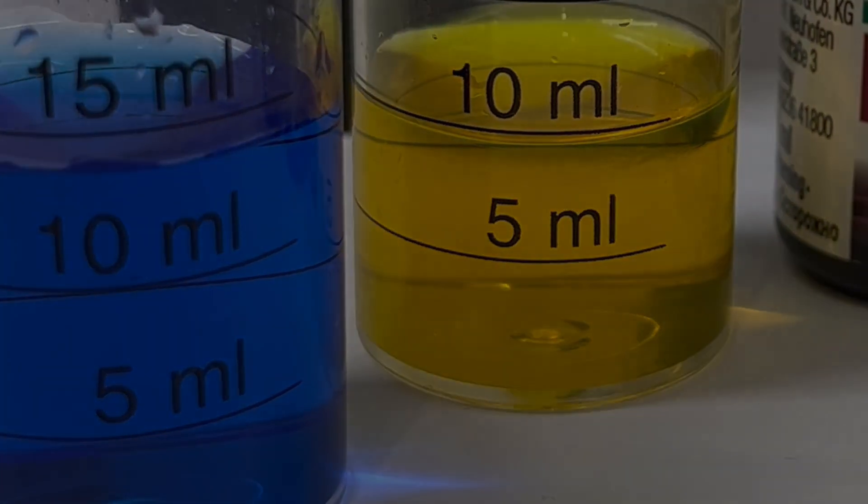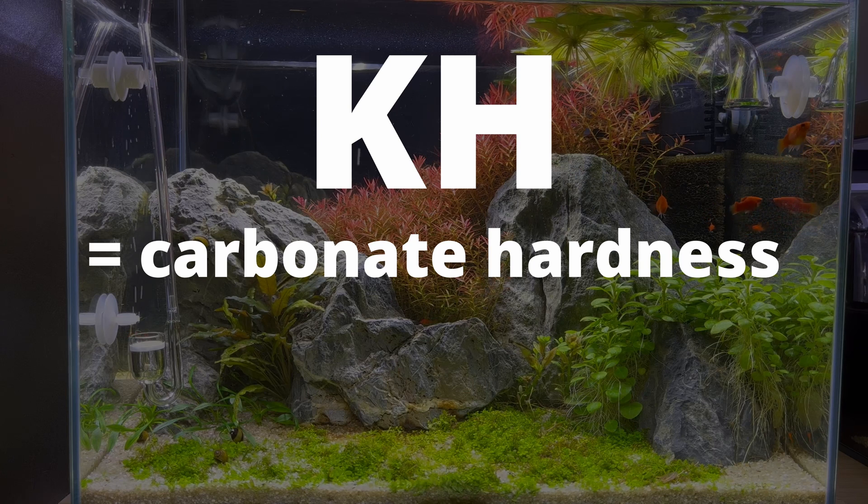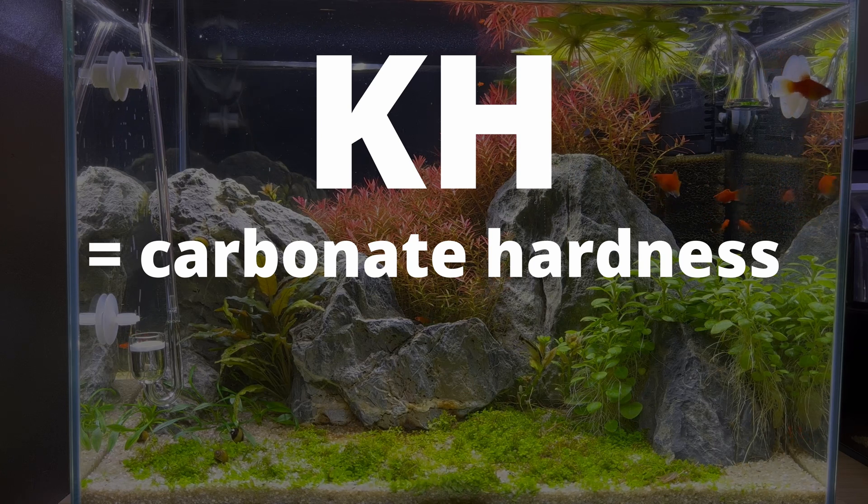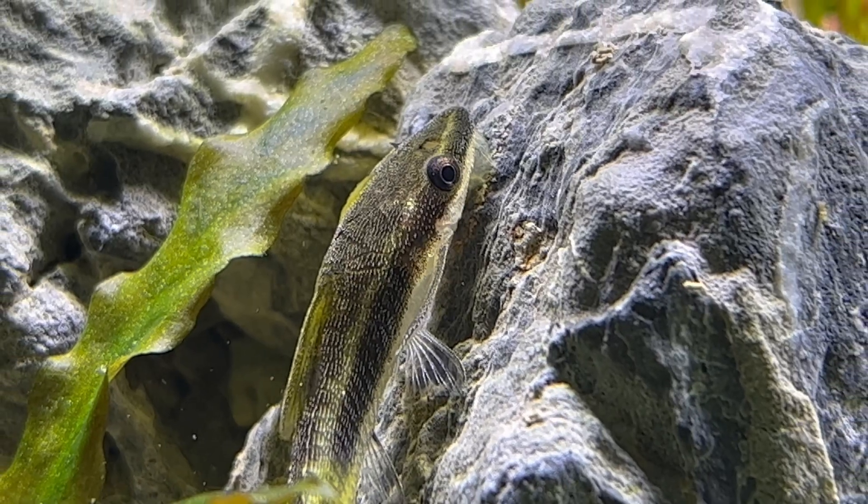OK, let's move on to the next parameter, which would be KH. So KH stands for carbonate hardness. And it measures the amount of carbonates and bicarbonates in water. And KH is very strongly connected to pH.